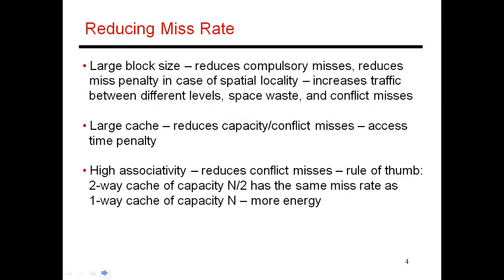From this analysis: using a large block size should reduce compulsory misses, and high spatial locality also reduces misses for neighboring data elements. However, a large block size can lead to an increase in conflict misses, more traffic between cache levels, and some wasted space because not all elements in the brought-in block will be touched, leading to underutilization in the cache.